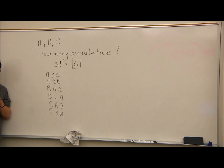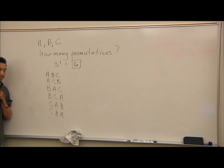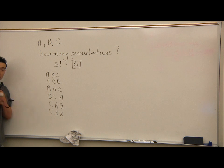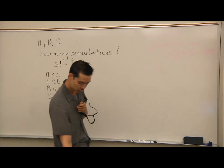So if on a quiz or test I said you have seven books, how many different ways can you arrange those seven books on a shelf? You would do 7 factorial, just like this. You're using all the books and counting how many different orders are possible.